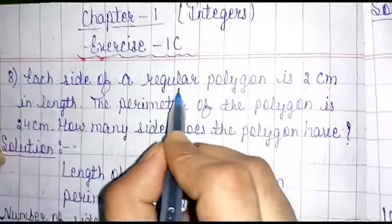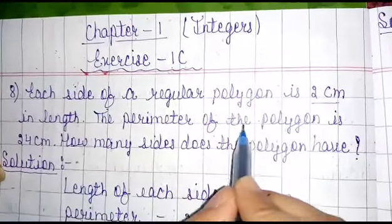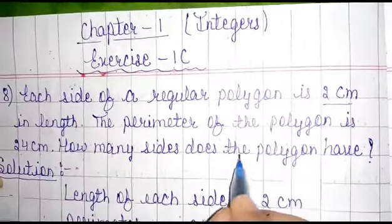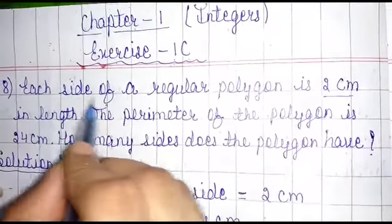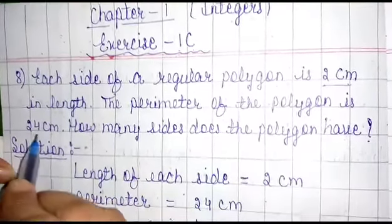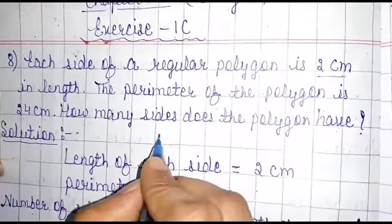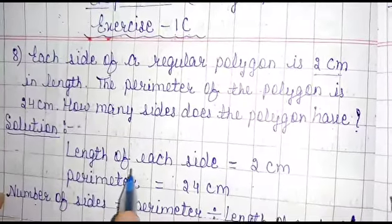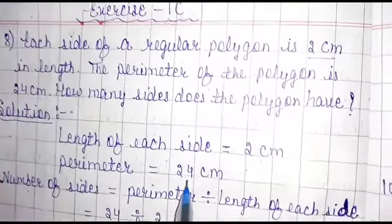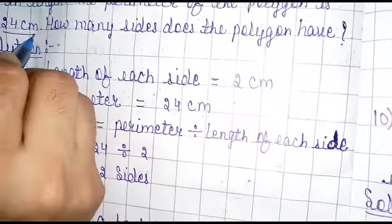Each side of a regular polygon is 2 cm in length. The perimeter of the polygon is 24 cm. How many sides does the polygon have? So the given values are: each side = 2 cm and perimeter = 24 cm.